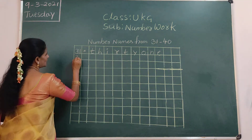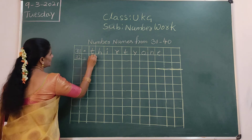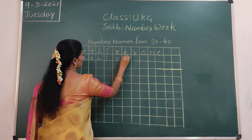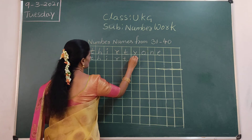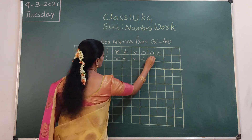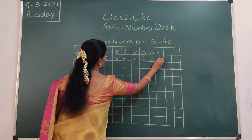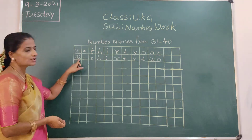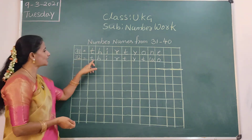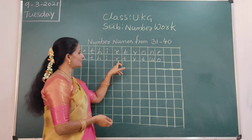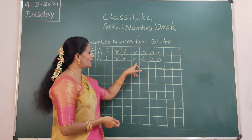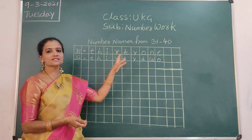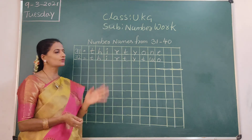32 — THIRTY-TWO. T-H, I-R, T-Y, T-W-O. 32. All letters in small letters only. Ok children?